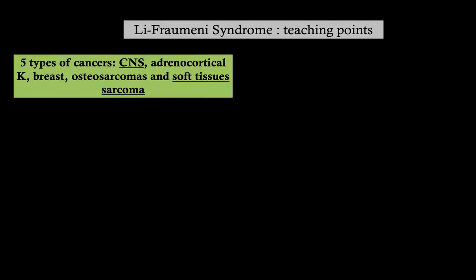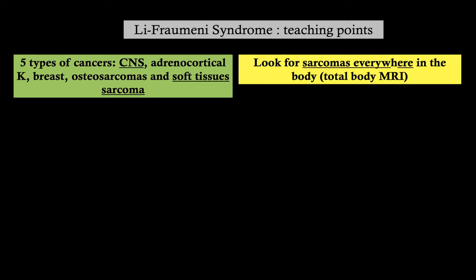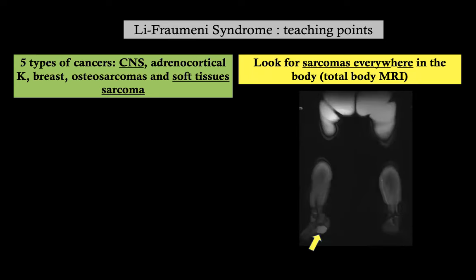So what is Li-Fraumeni syndrome? First, there are five types of cancer: brain tumors, adrenocortical carcinoma, breast cancer, sarcoma — but soft tissue sarcomas are so important, and they can be everywhere in the body. This is another patient with Li-Fraumeni — look at the foot with this sarcoma. They are so important that they are part of the clinical criteria for diagnosis of Li-Fraumeni, established before the mutation in P53 was found.